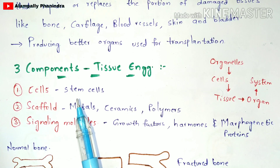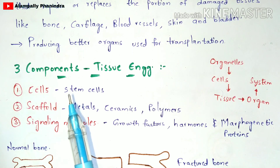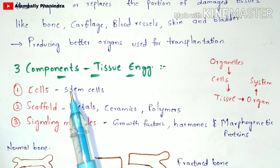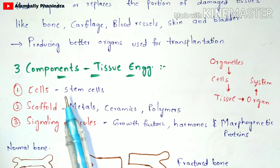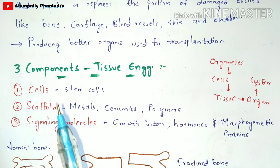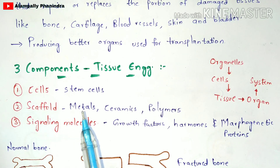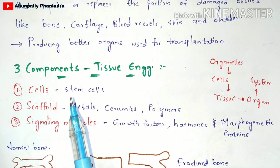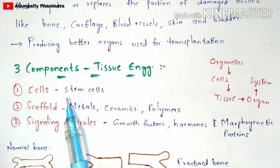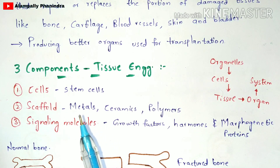Cells include stem cells. Stem cells are of two types: adult stem cells and embryonic stem cells. In tissue engineering, the most widely used are adult stem cells, because adult stem cells have the capacity to develop tissue into a new form. Adult stem cells are highly preferred, though they are very few in number and their cell division process is very slow.